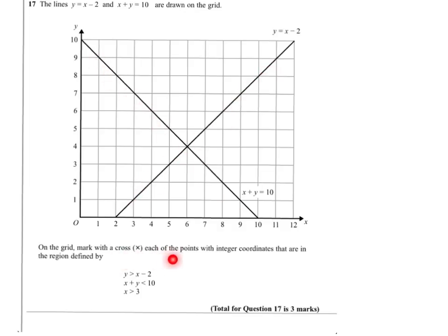On the grid, mark a cross at each of the points with integer coordinates that are in the region defined by y is greater than x minus 2, while x plus y is less than 10, and x is greater than 3.